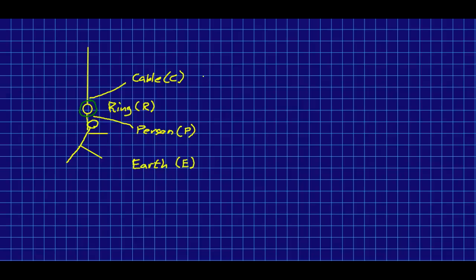So now I'll just list the forces that each of these exerts, and that's pretty simple at this stage. We'll just have some contact force exerted by the cable on the ring, and we will have some contact force exerted by the person on the ring, and we will have a gravitational force exerted by the Earth on the ring. And that should be all there is.